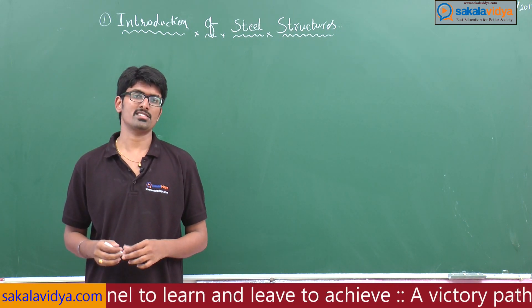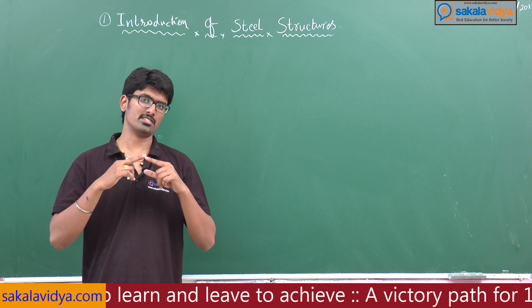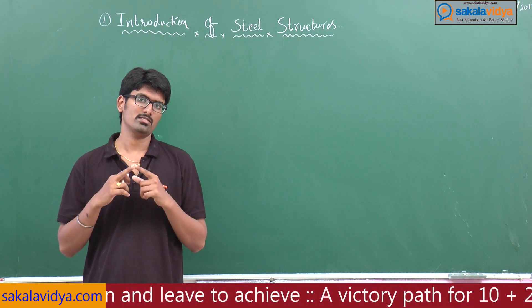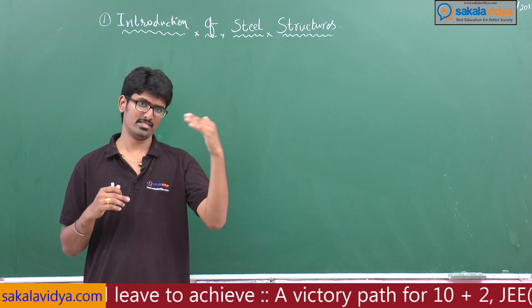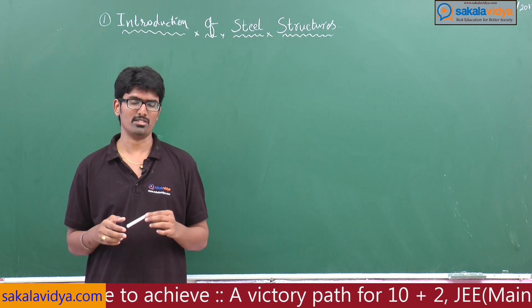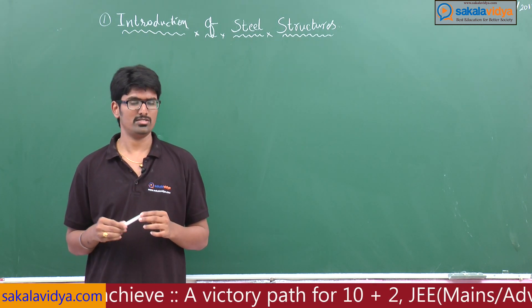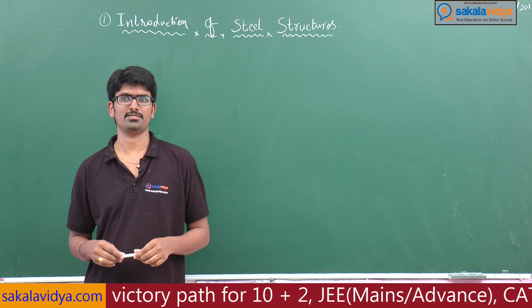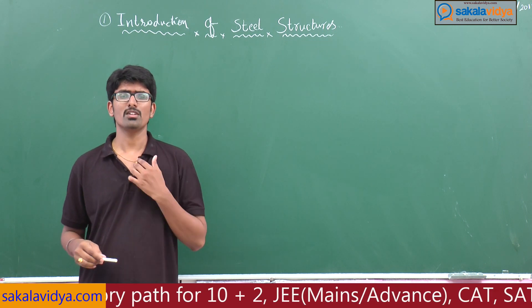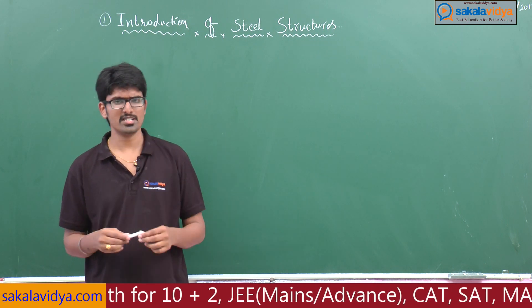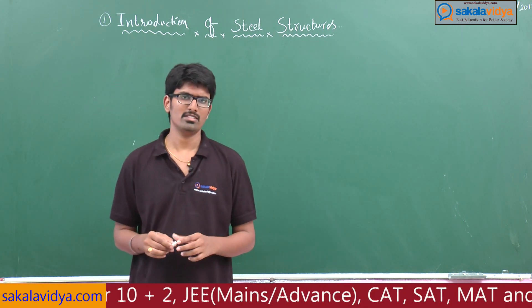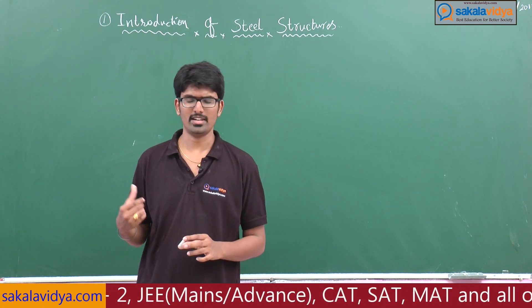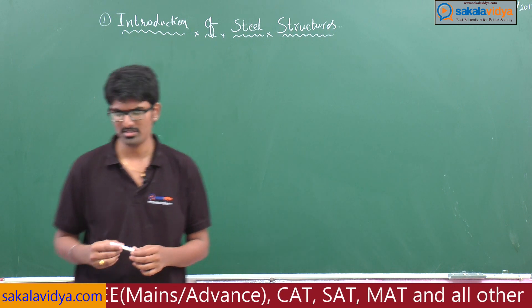Other examples include cinema halls, auditoriums, and factories, which are constructed using truss members, plates, and steel plates. These are also examples for steel structures. Now, what are the various types of methods used for analysis?